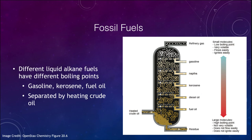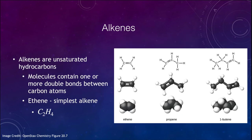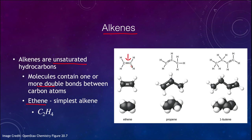Now let's look at another type called the alkenes. While the name sounds similar, alkenes are examples of unsaturated hydrocarbons — they have double bonds between a pair of carbon atoms. The simplest of these is ethene, which has a double bond between the two carbon atoms, giving it less hydrogen than ethane. Because of that double bond, we get C2H4.